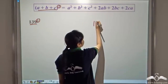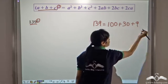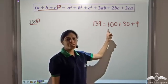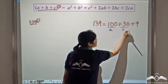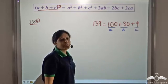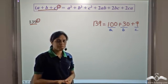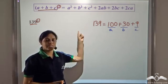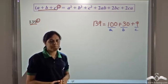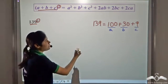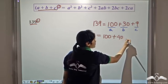So 139 can be written as 100 plus 30 plus 9. But can we make it even simpler? Remember that this is an identity, so it is true for all values of a, b, and c — including negative values. So if we write 139 as 100 plus 40 plus negative 1, that also gives us 139.